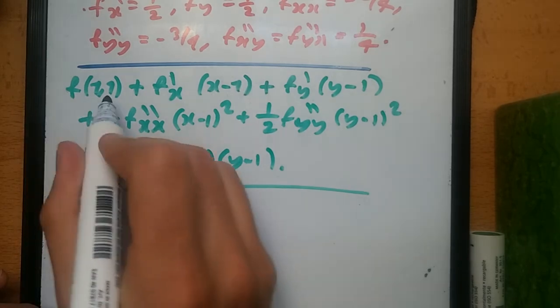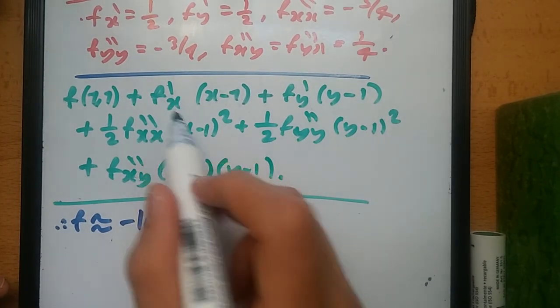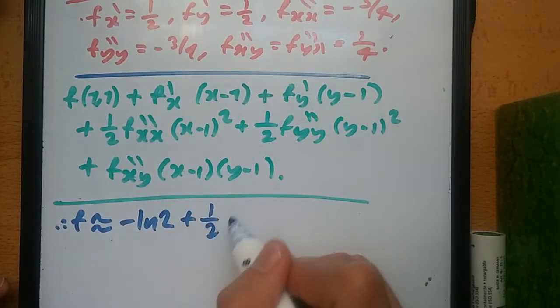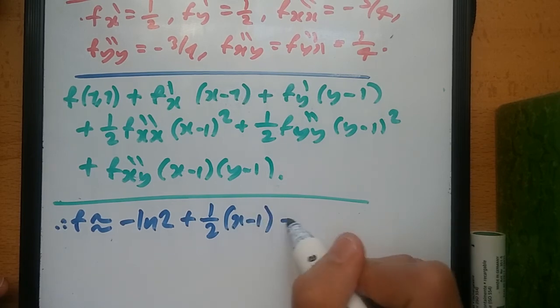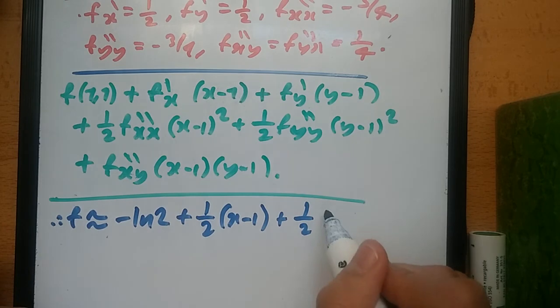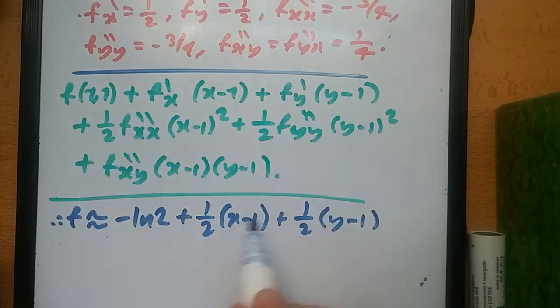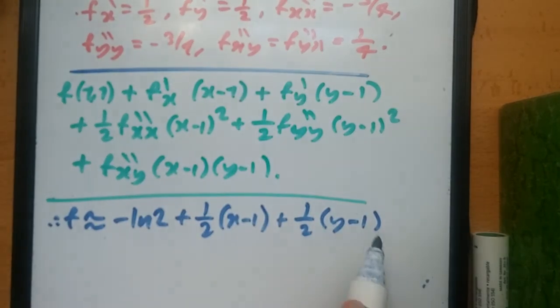So at the point (1,1), we get minus log 2 plus f prime x would be half, x minus 1, plus y prime would be again half, y minus 1. So remember I put 1 here because this was a and this was b. So then they're both (1,1).